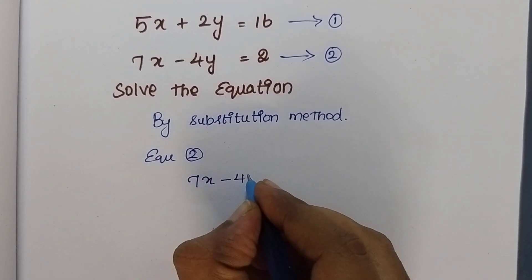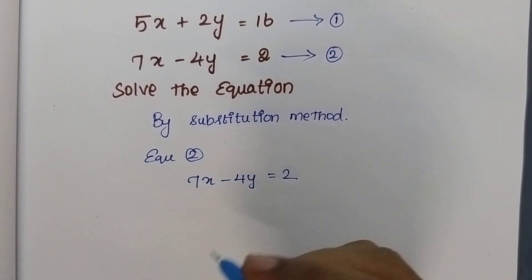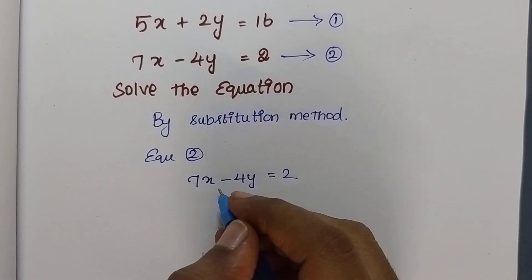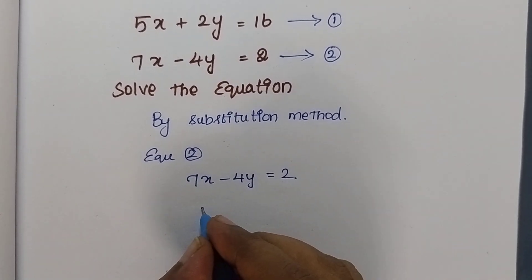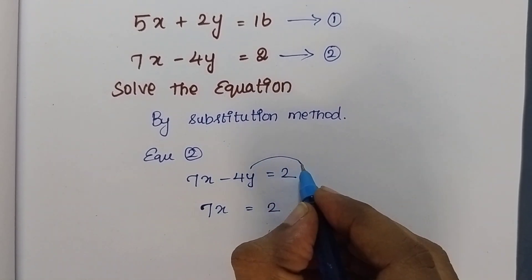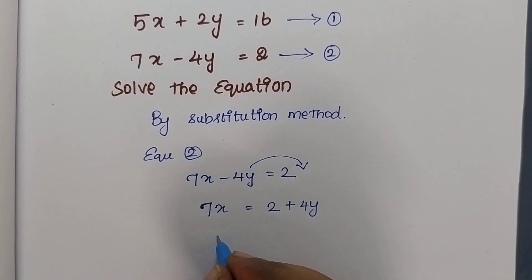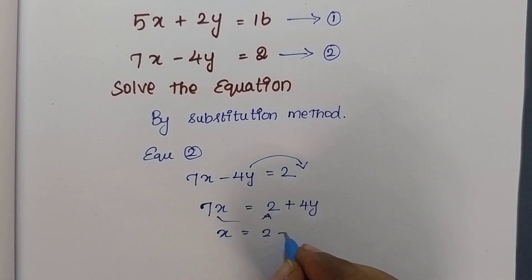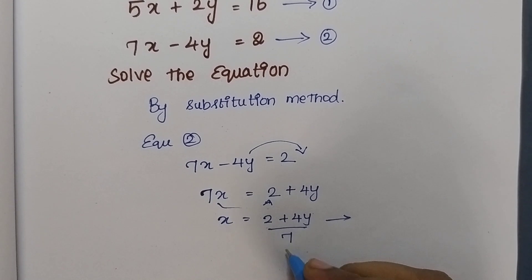Therefore, 7x minus 4y is equal to 2. First, I am going to find either x or y from this equation. Now, I am going to find x. So I am going to keep the x term here: 7x is equal to 2. If this y term moves to the right side, the sign gets changed — then plus 4y. I want x alone, so 7 moves to this side as division. Therefore, x is equal to 2 plus 4y divided by 7.